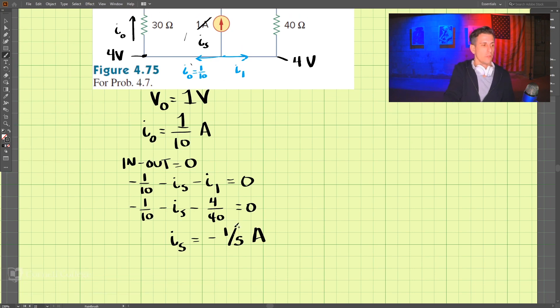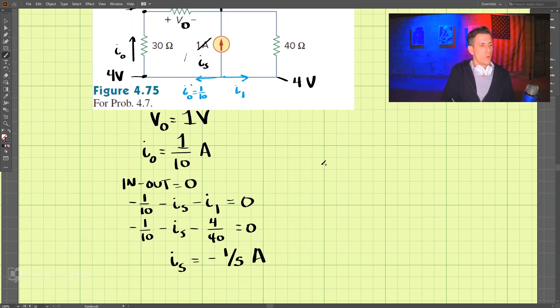So it's negative. Our original here was 1 amp. So our K value, our constant that we'll multiply the circuit by for linearity, is 1 divided by negative 1 fifth here, which comes out to be negative 5.